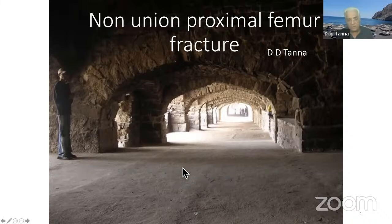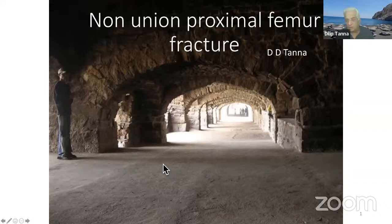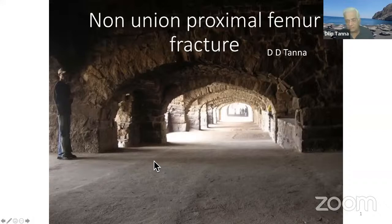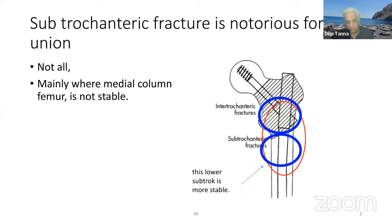I think we discussed some cases of nonunion of the proximal femur fracture. This is a small presentation and I will not be talking about those cases we discussed last time. Subtrochanteric fracture is notorious for nonunion — not all, mainly where the medial column of the femur is not stable. We talked about the upper subtroc and the lower subtroc.